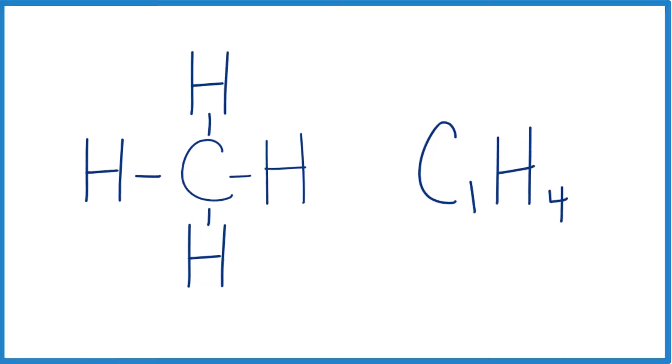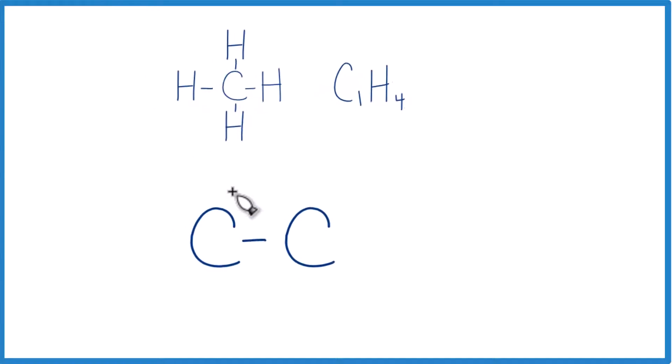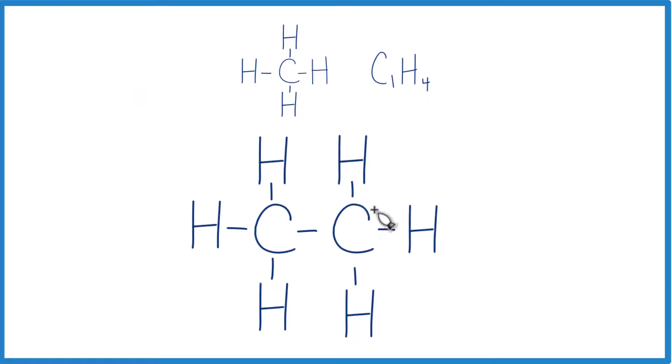If we had two carbons, again, the formula for alkanes, single bonds and only carbons and hydrogens, each carbon bonds to four things. Here, we end up with C2H6. This is called ethane.